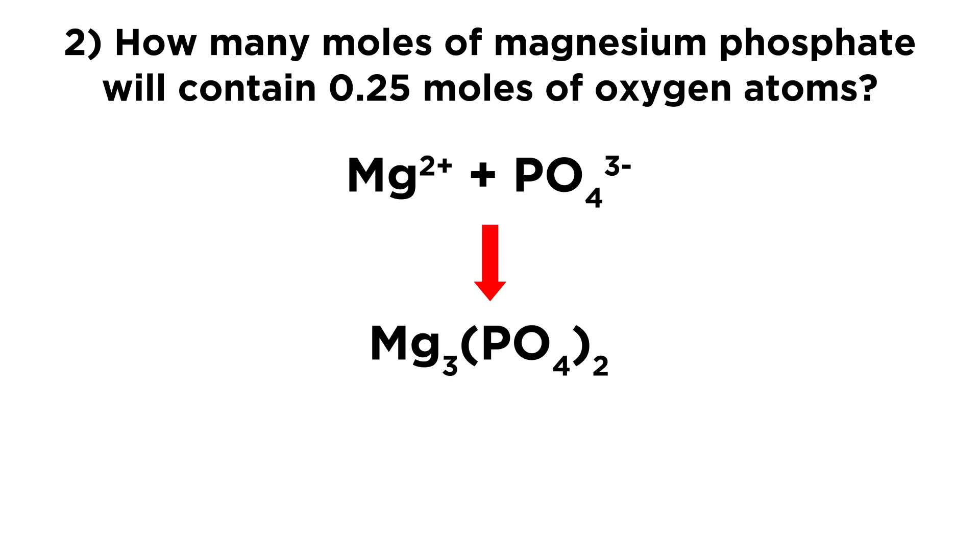So we have 3 magnesium ions and 2 phosphate ions. And so what we need to do now, now we know exactly what's going on and how many oxygen atoms there are per formula unit here. And so we have 0.25 moles of oxygen atoms.